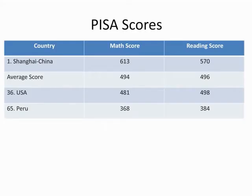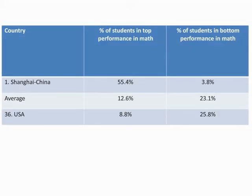As you can see from this chart, the top scoring country was China. The USA was 36th of the 65 countries that took the test, and also below the average country score. So do the results that PARCC is providing align with the international tests? The average PISA country places 12.6% of students in the top performance category. The USA placed 8.8% of its students in the top performing category, while China had 55% of its students in the top performance category for math.